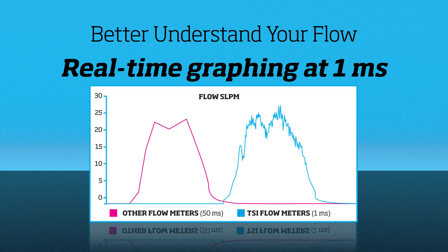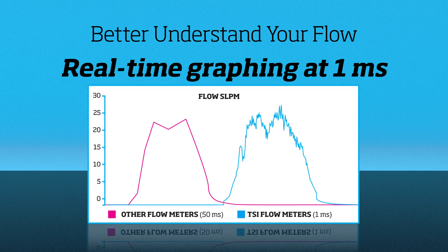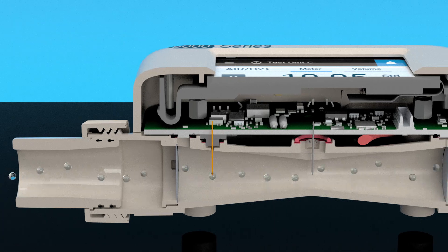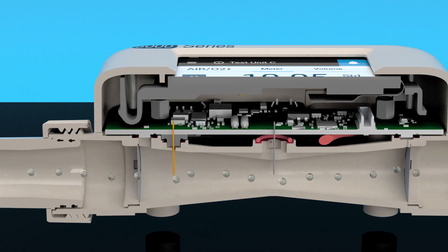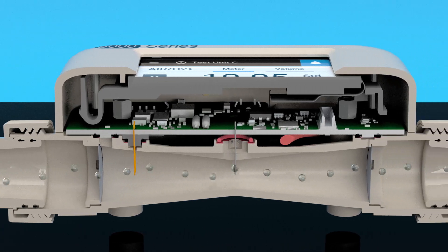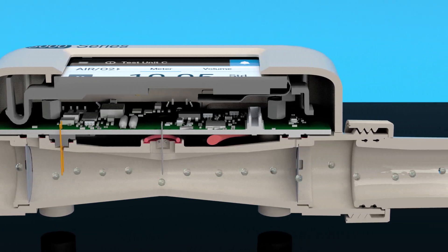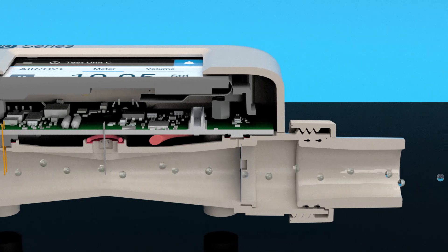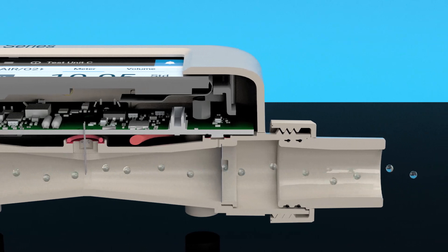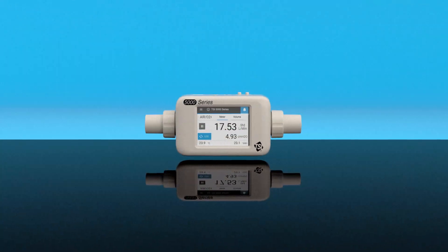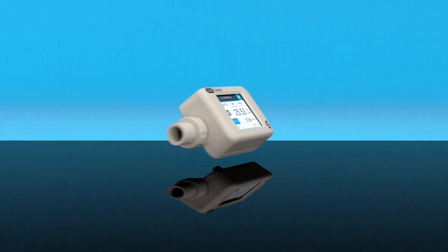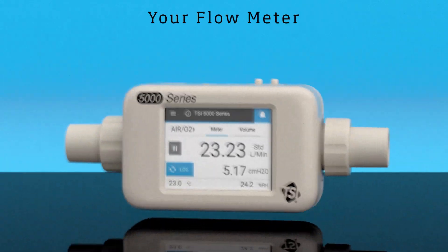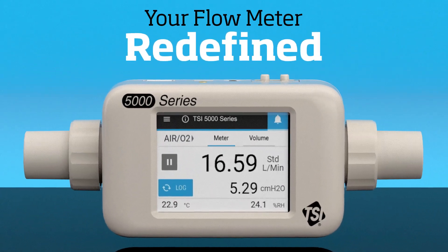You can combine the fast response of a TSI flow meter with our software's real-time graphing to see your waveforms in high resolution. Built upon the same proven TSI flow sensing technology trusted by Fortune 500 companies for more than 35 years, the 5000 series flow multimeter is breaking new ground — your flow meter redefined.